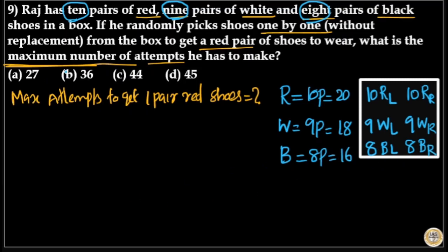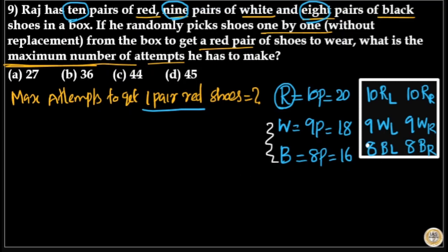To get the maximum number of attempts to pick one pair of red shoes, first he has to take all the white and black shoes — that is, he takes all the black and white shoes from the box.